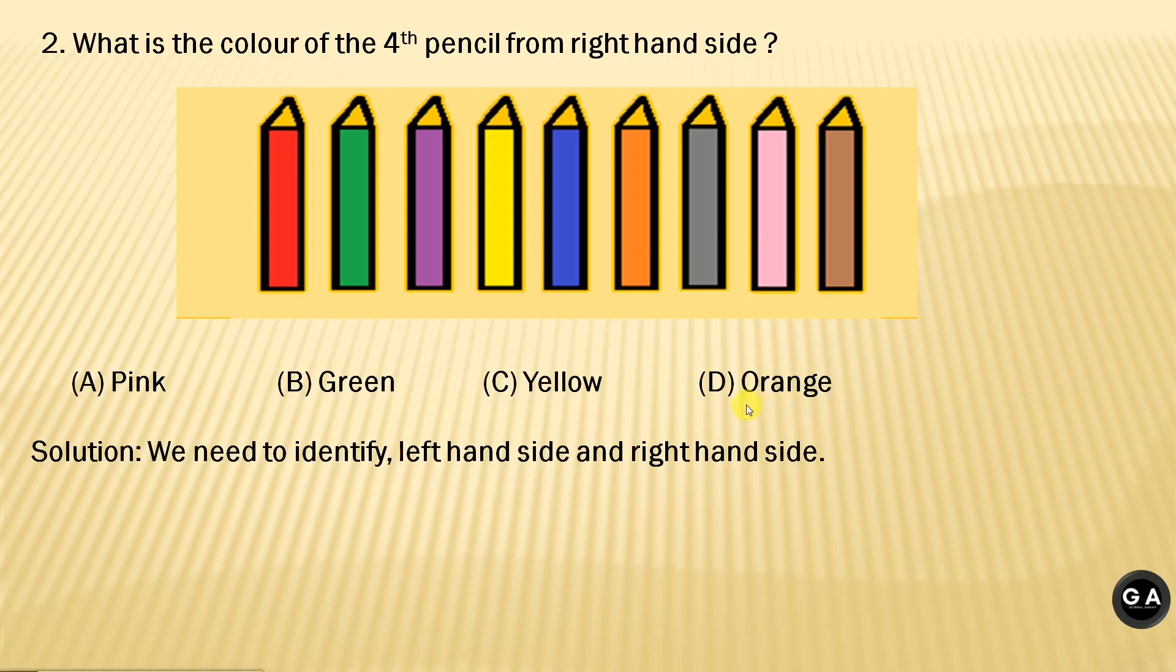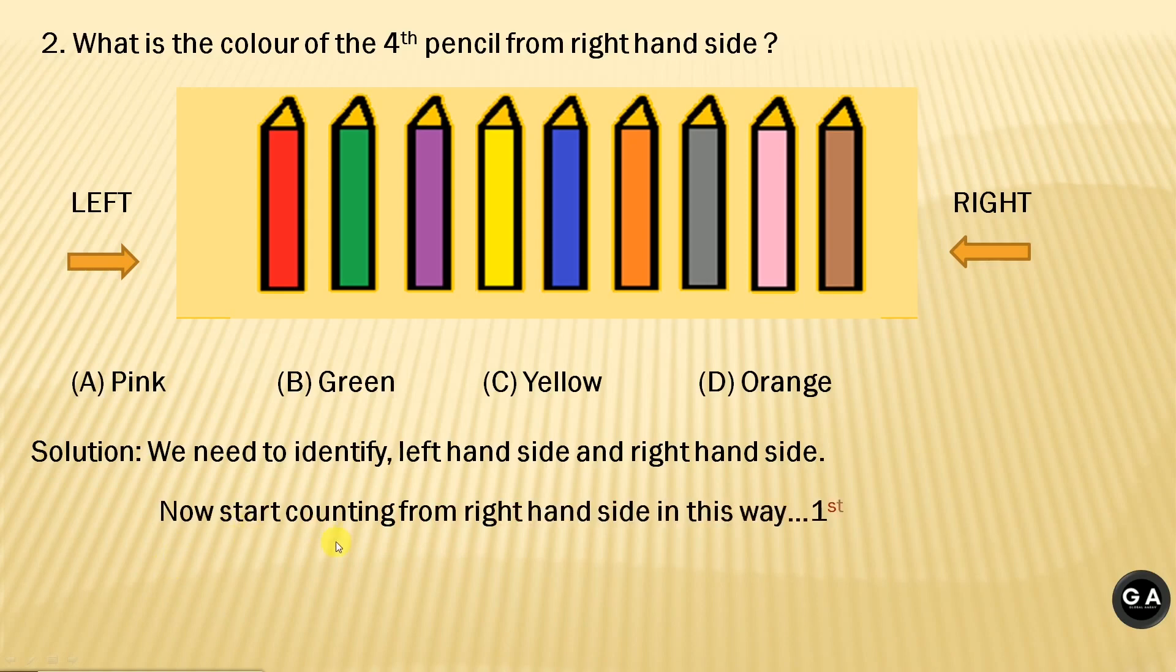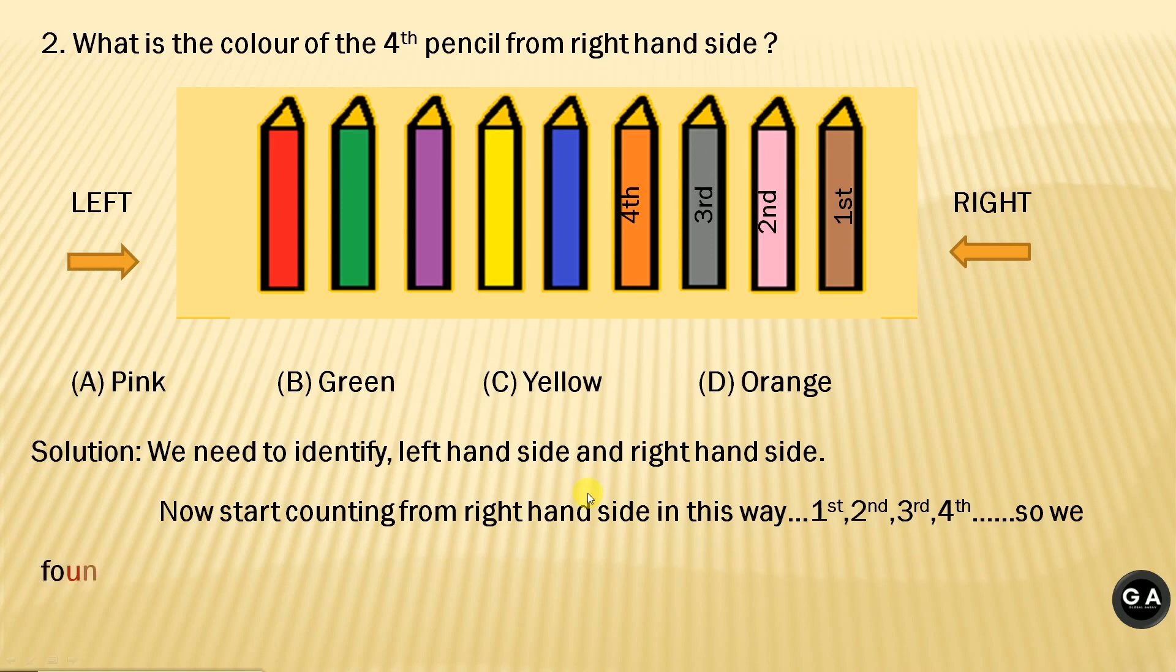Well friends, to solve this kind of question, first we need to identify which is left hand side and which is right hand side. You can see that this is left hand side and this is right hand side. You can simply use your hand to judge this. Now, start counting from the right hand side in this way: first, second, third, and fourth. So we found that orange color pencil is at fourth place. The correct answer is option D.